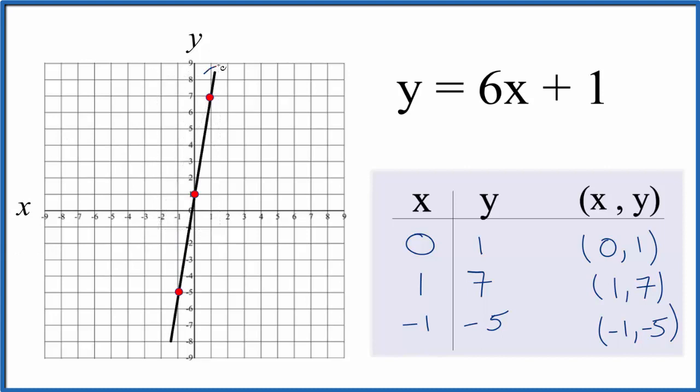We can put arrows on the end to show that they go into infinity, and that's the graph for y equals 6x plus 1. We could have used other points, and they would show up on this line, but these three, they usually fit fairly well on the graph paper.